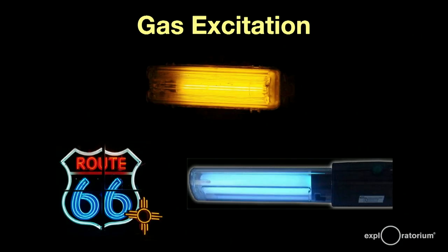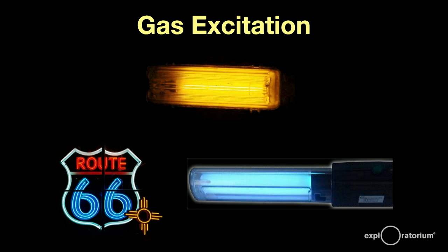Now that we've got the jargon under our belts, let's talk about making light. The first way is to excite atoms of a gas. When the atoms de-excite, they give off light.